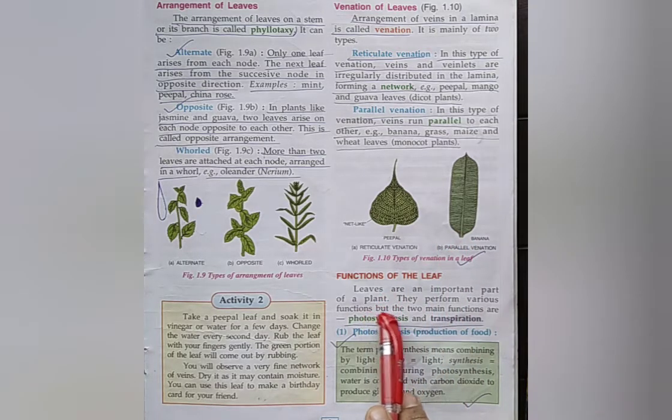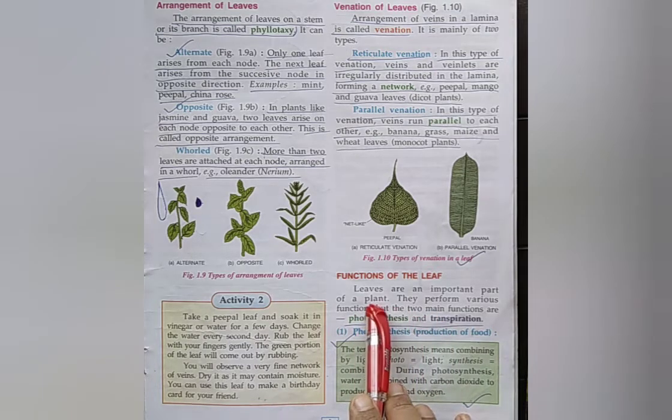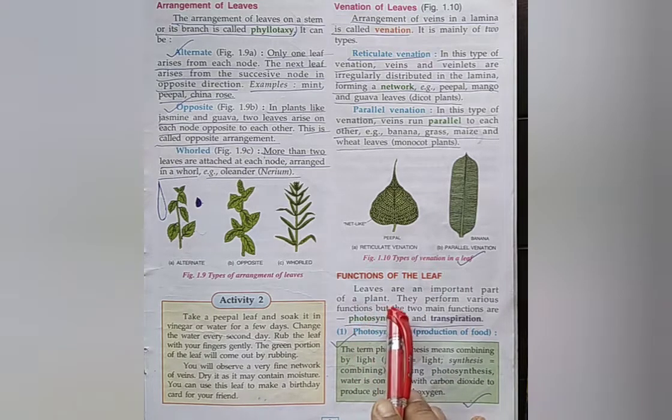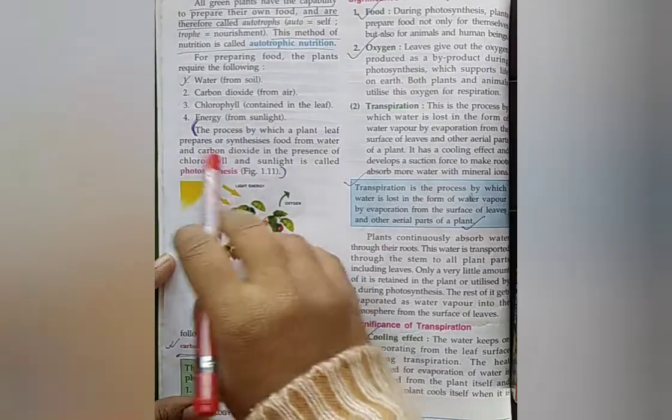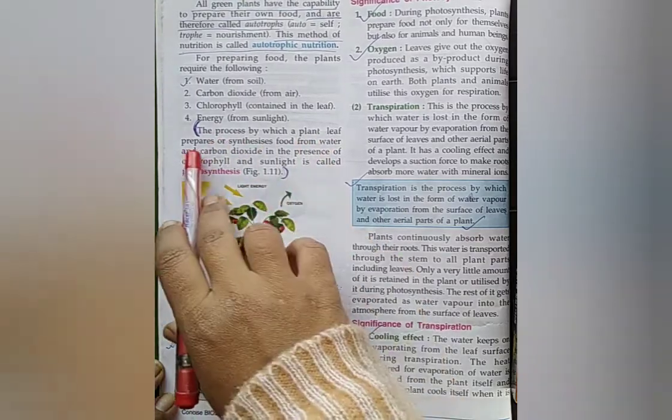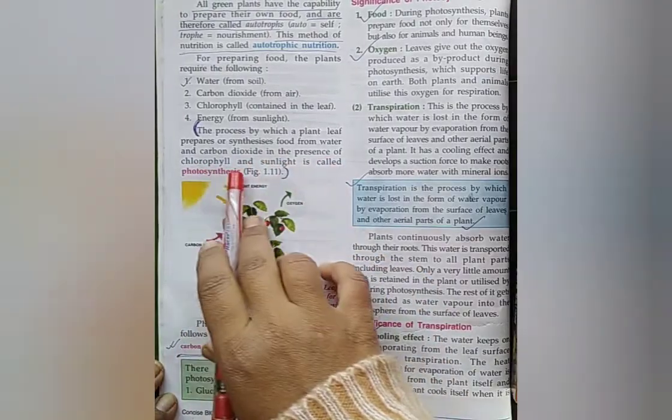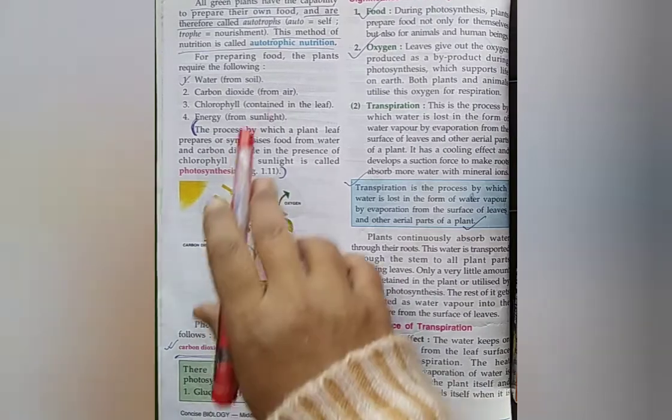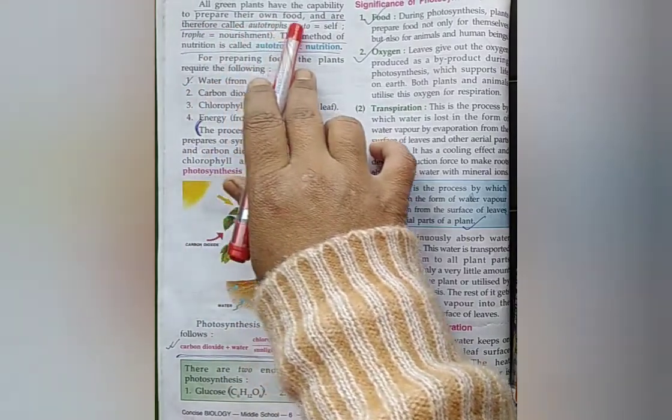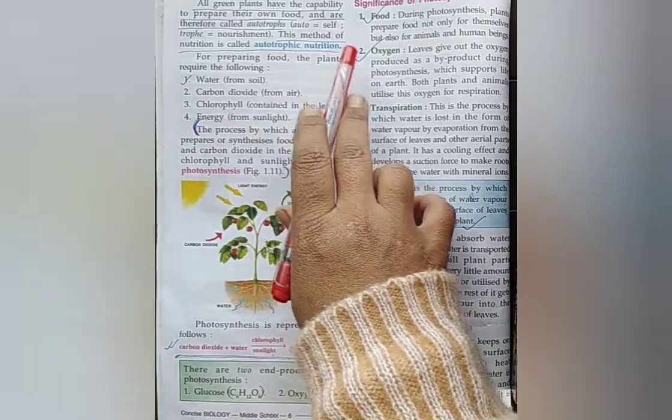Write the names of the two functions of a plant: Photosynthesis, transpiration. Two functions of leaf. Next question: What is photosynthesis? Answer: The process by which a plant leaf prepares or synthesizes food from water and carbon dioxide in the presence of chlorophyll and sunlight is called photosynthesis. Next: What is autotrophic nutrition? All green plants have the capability to prepare their own food and are therefore called autotrophs, and this method of nutrition is called autotrophic nutrition.